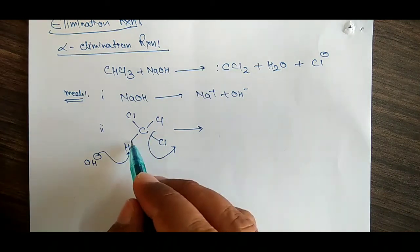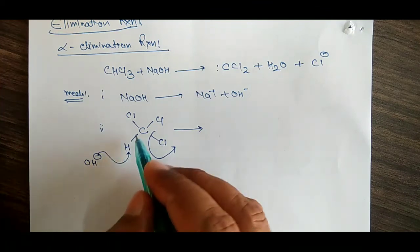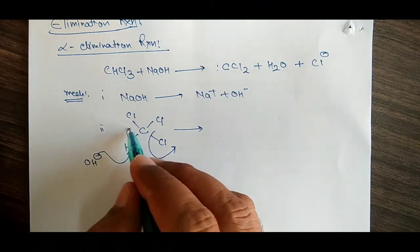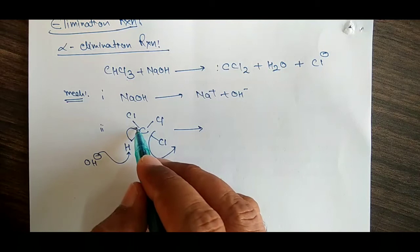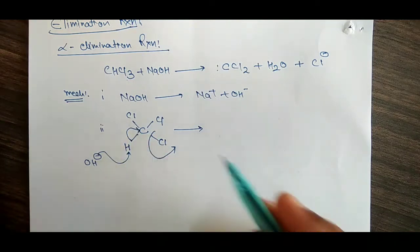The chlorine is more electronegative than that of this carbon, so it will rather pull the electron density toward itself. Therefore, carbon will carry a positive charge.